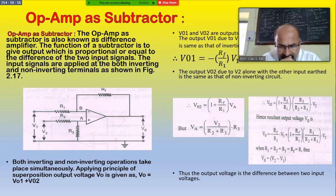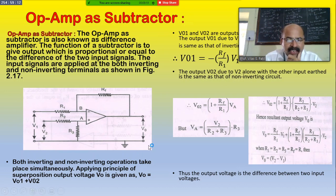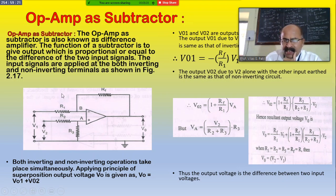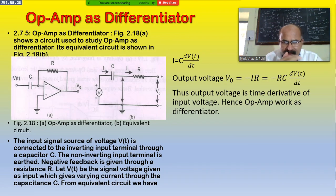According to this design, if R1 = R2 = R3 = Rf — that is, all equal to R — then V0, the output voltage, is the difference between two voltages: V2 minus V1. V2 is the greater and V1 is the smaller, and their difference is observed at the output of the operational amplifier. This application is known as a subtractor. Now we are switching to the next application: the operational amplifier as a differentiator.